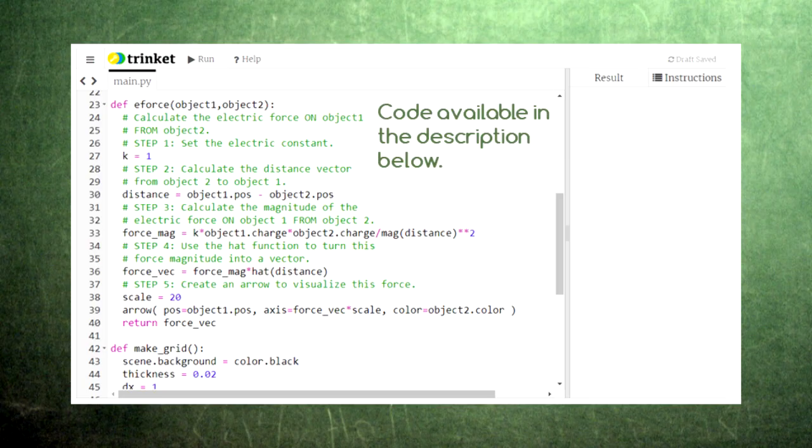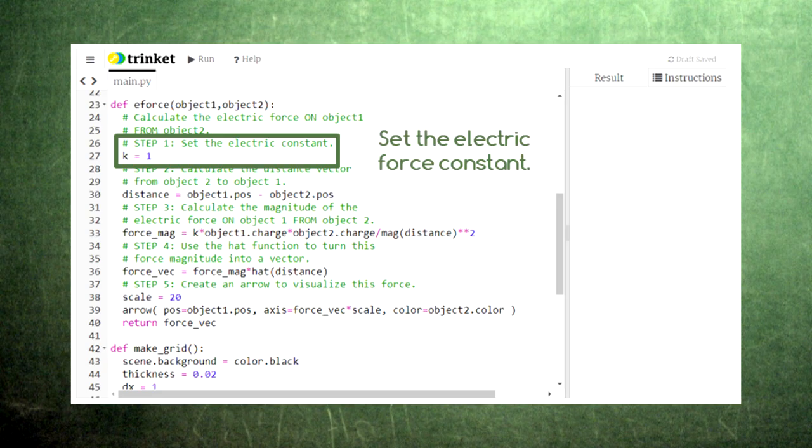Here's a function we can use to visualize the electric force. Remember, object 1 is experiencing the force, and object 2 is exerting the force. First, we set the value for the electric force constant. We'll use a value of 1 for now to keep the math simple, but later you will change this to the real-world value.